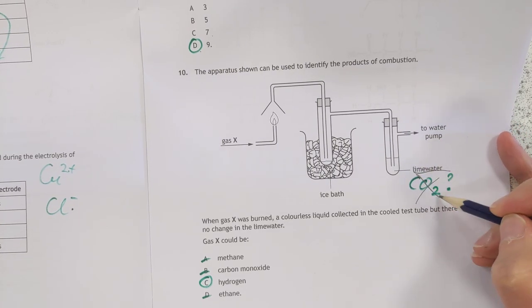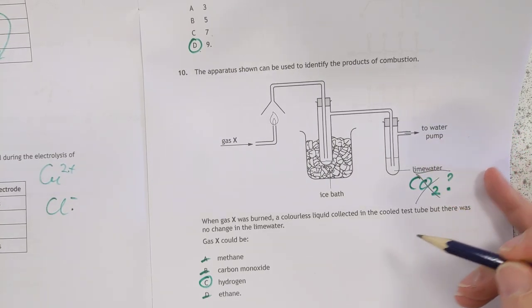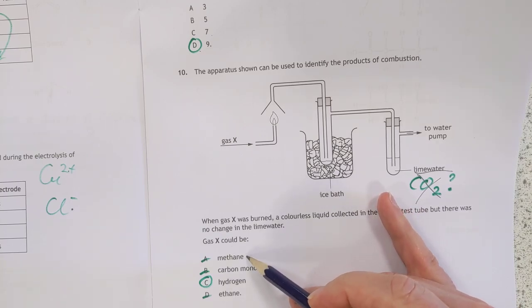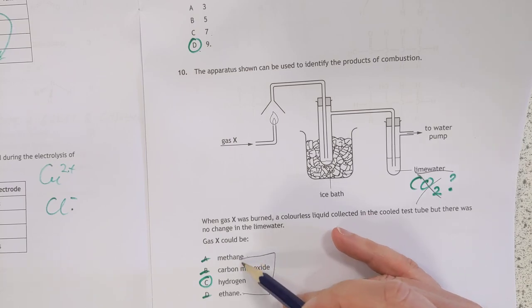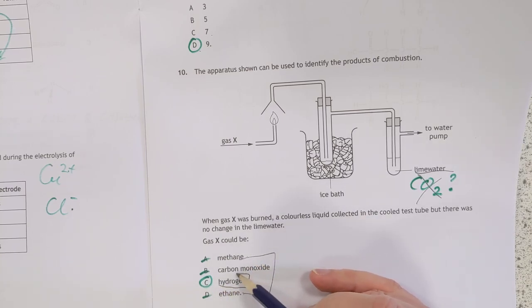That means you're not making CO2 when you burn gas X, which means it definitely can't be methane, can't be carbon dioxide, can't be ethane either for the same reason as that one. So therefore you're sort of left with hydrogen as the answer.